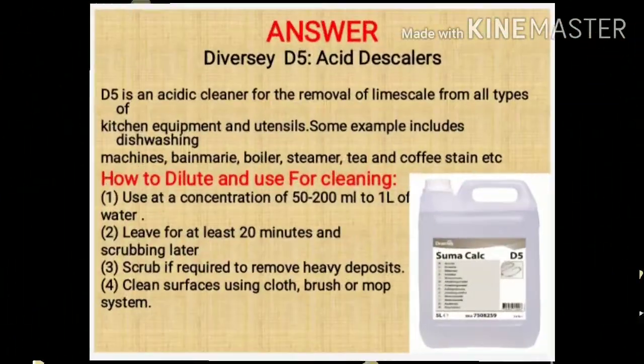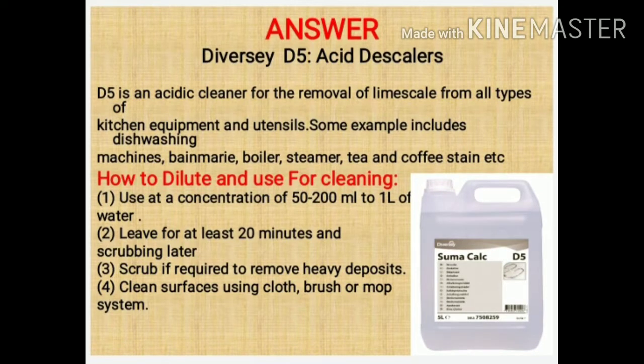Agla chemical hai D5. D5 isko hum wahan use karte hain jaise machines ko saaf karne ke liye — burner ho gaya, boiler ho gaya, steamer ho gaya, ya jahan pe chai aur coffee ke daag pade hain, wahan pe hum D5 use karte hain. Aur iska dilution hai 200 ml, woh bhi 1 liter paani mein.